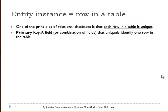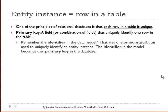One of the principles of relational databases is that each row in a table is unique. The primary key, a field or combination of fields that uniquely identify one row in a table, gives us that uniqueness for each row in the table.